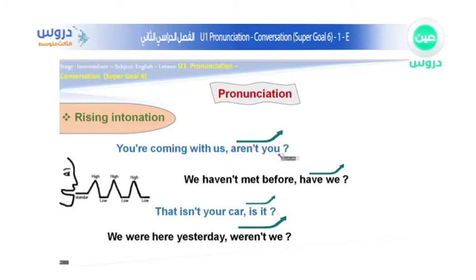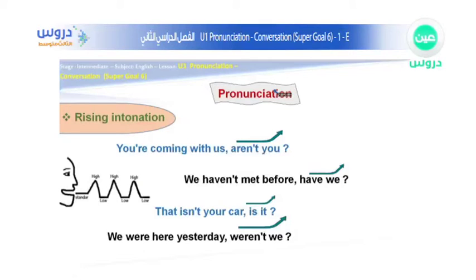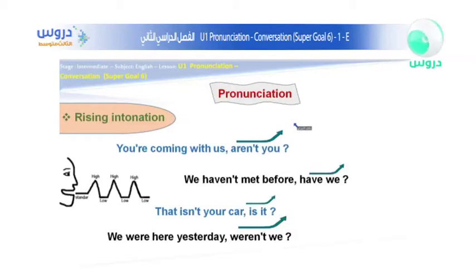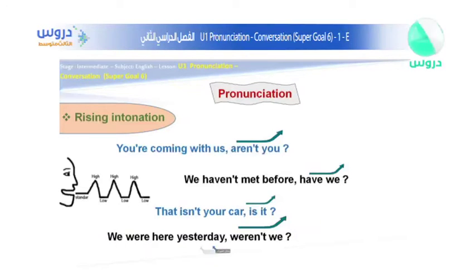The four examples are: 'You're coming with us, aren't you?' 'We haven't met before, have we?' 'That isn't your car, is it?' 'We were here yesterday, weren't we?' Those are tag questions. We use tag questions to make sure about some information. With tag questions, the voice has to go up at the end — go high at the end. This is the pronunciation.